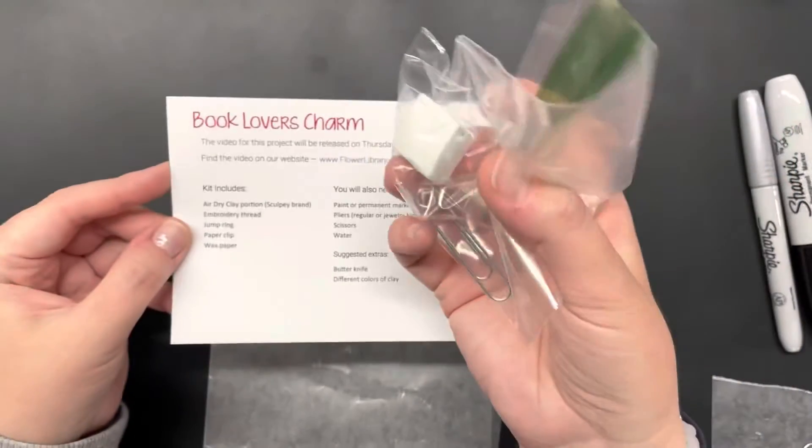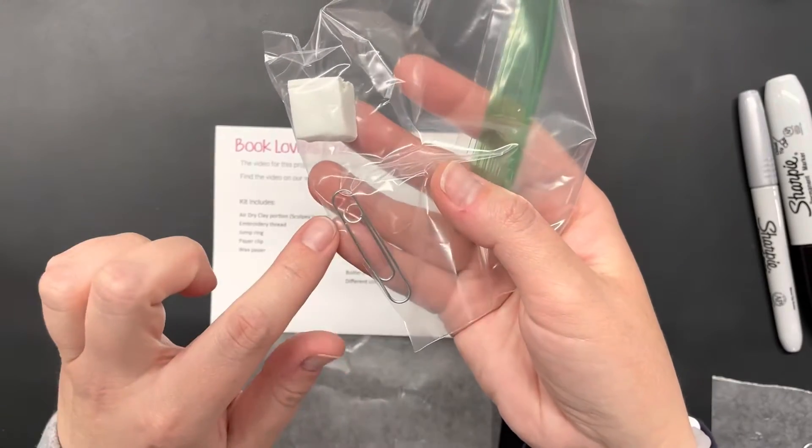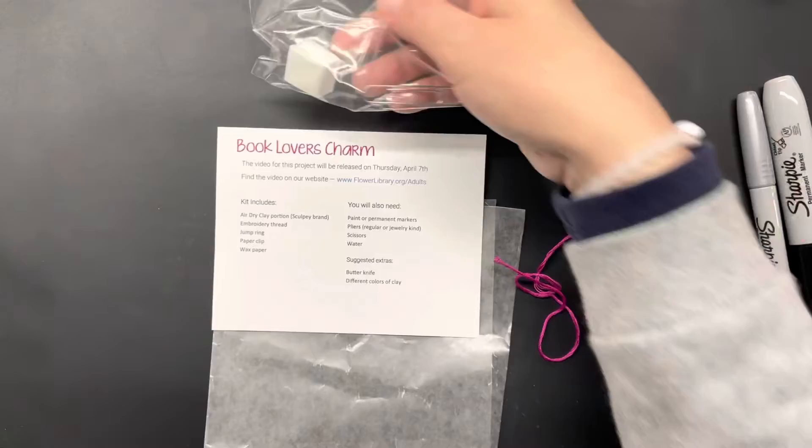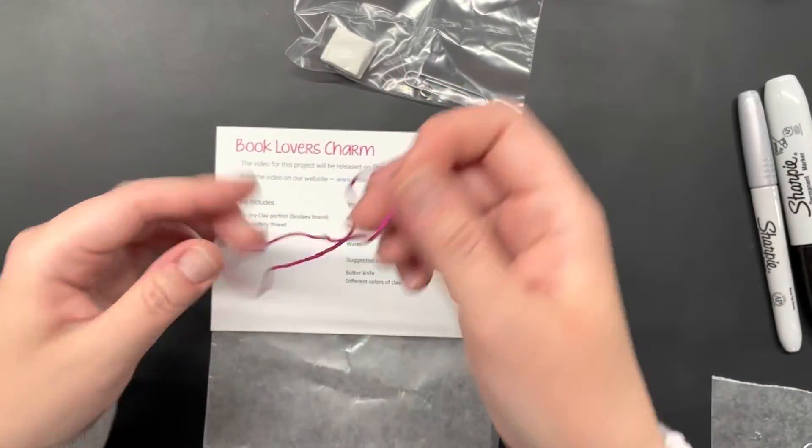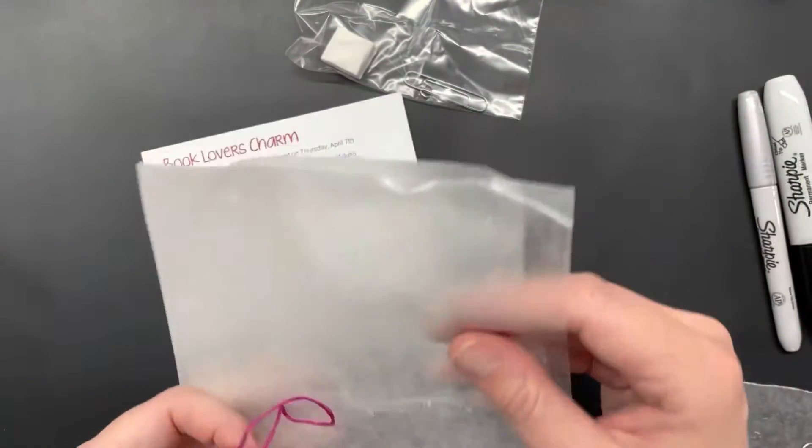In your kit you'll receive a portion of the air dry clay. In your baggie you will also have the jump ring and a paper clip. In your kit you will also have a piece of embroidery thread in different colors and a piece of wax paper.